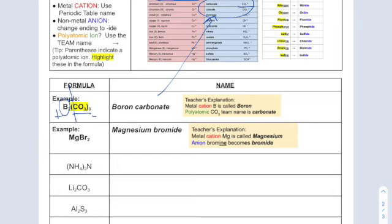Next one, we see capital Mg, capital Br. So there's no polyatomic ion here. The first one, magnesium, we read it off the periodic table. And the second one, on the periodic table, it says bromine. But we're going to change the ending to bromide. We see that over here.